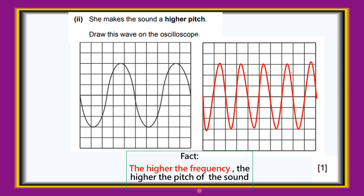Looking at the higher-pitch wave: it has 1, 2, 3, 4, 5 complete oscillations, so F = 5 Hz. This is a sound with a higher pitch. The original frequency was 2 and the new frequency is 5.